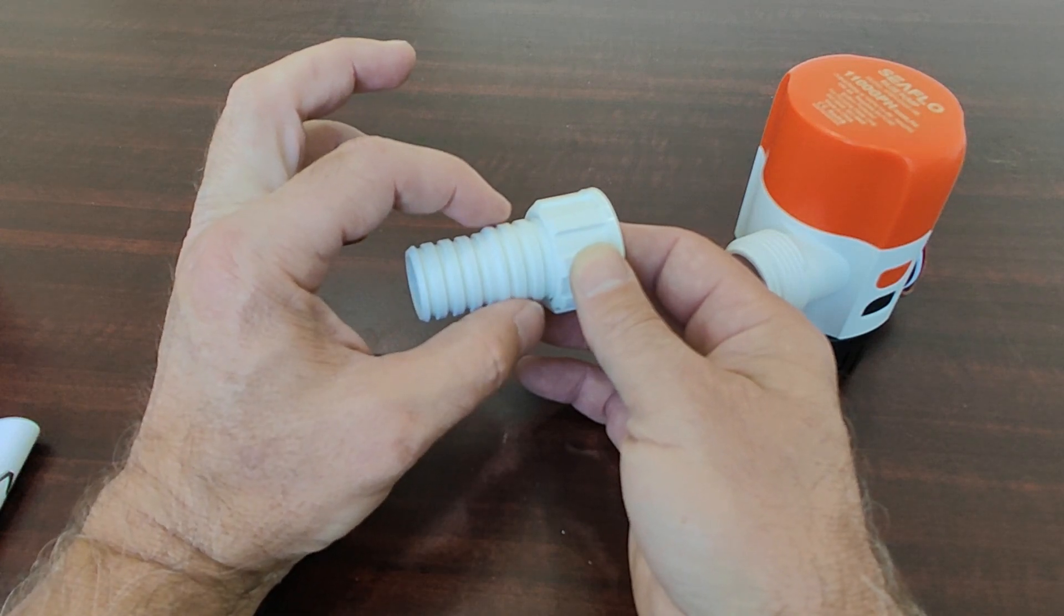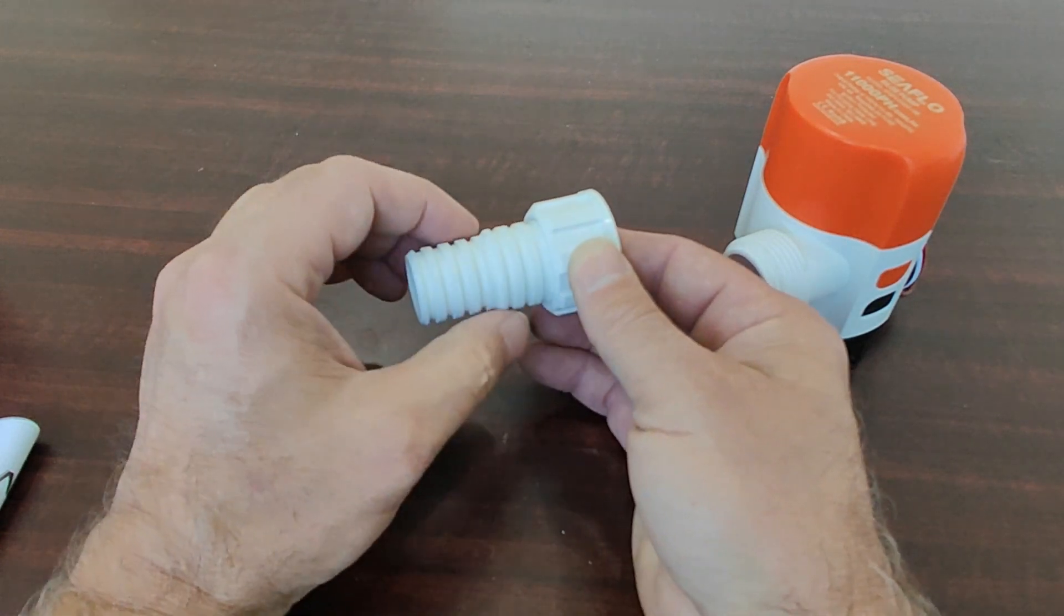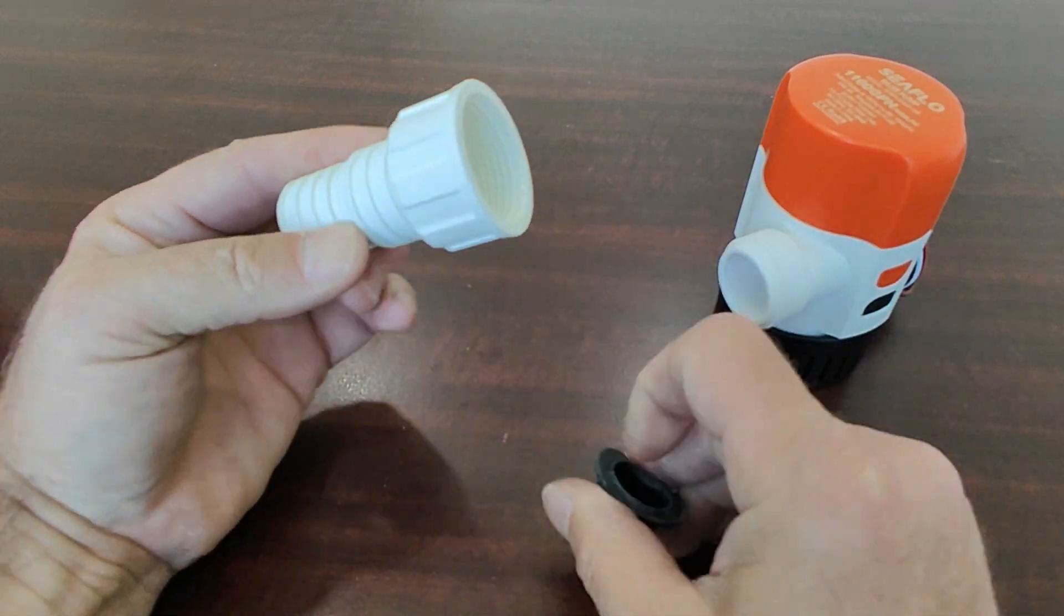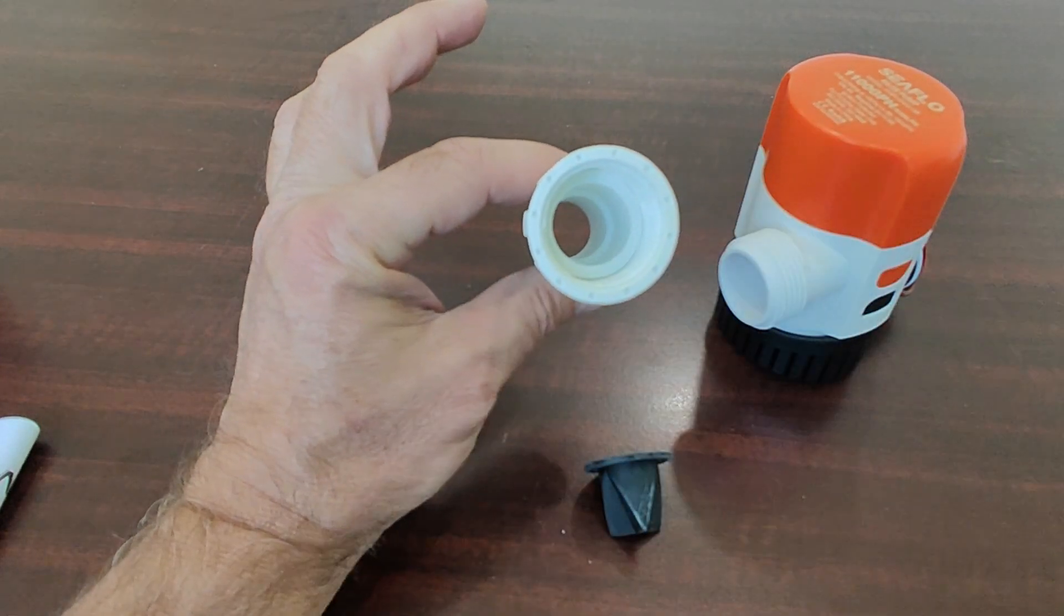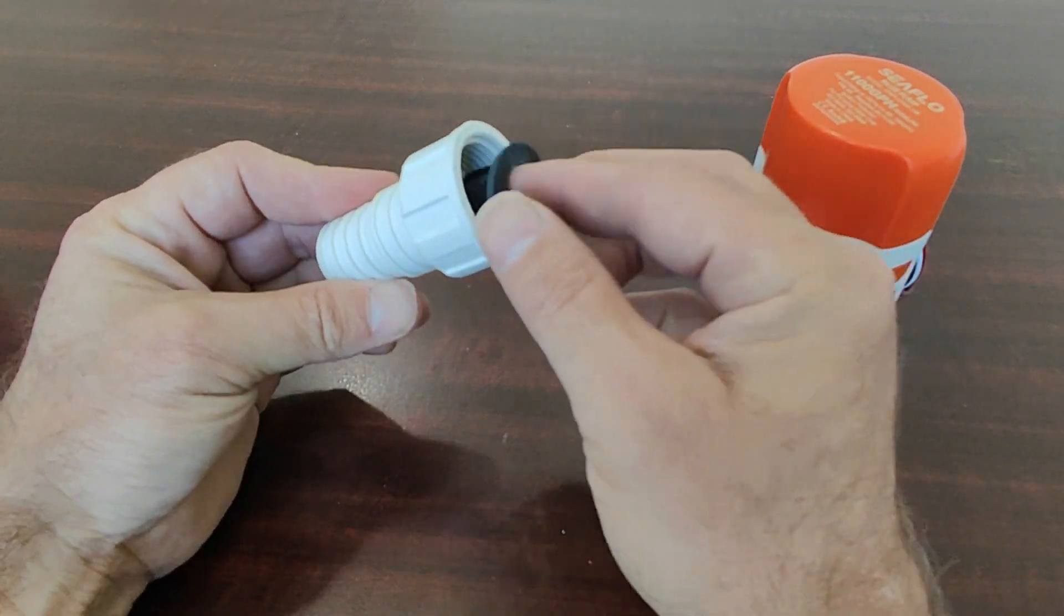If you want to use the inch and an eighth, you can just cut off the one inch size and have the complete diameter of the inch and an eighth available. And it includes this check valve.